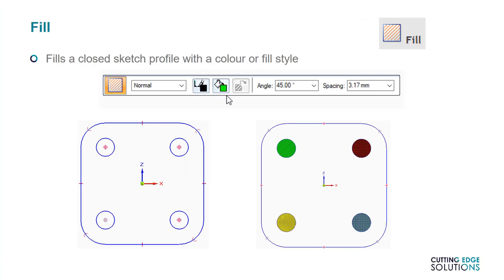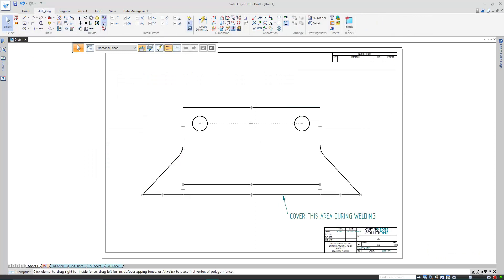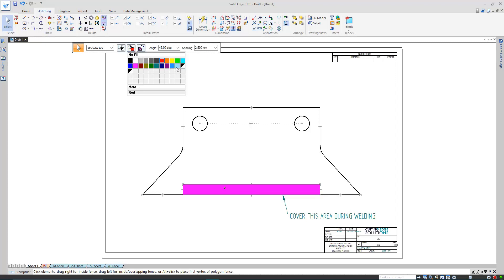Fill is a command which is probably more useful in the draft environment than the part, as it's used to highlight closed regions with colour. If used in an ordered part or assembly sketch, you'll lose sight of these filled regions after returning to the 3D environment, hence why it's probably more useful in the draft environment. Here's an example. I want to highlight this particular sketch section in red, to highlight it for the manufacturing team. I'll choose the colour and fill style, and click on the region. If needed, you can select the filled region, and edit its colour after placement, or delete it entirely.